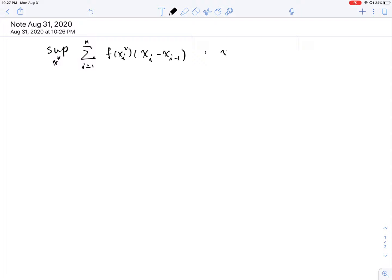And remember, this xi star is inside the closed interval [xi-1, xi]. And this is what we were saying, that this is supremum over x star and the Riemann sum, S(P, x star), right?